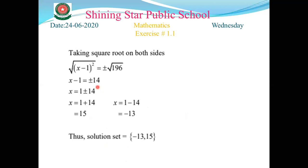The sixth step: take the constant from the left side to the right side. -1 becomes +1. So x = 1 ± 14. Seventh step, simplification: 1 + 14 = 15 and 1 - 14 = -13. So the answer is {15, -13}. The lecture is finished.